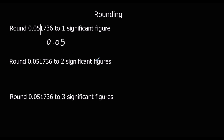Two significant figures: 0, 0, 1, 2. The next number is a 7, so that's 5 or above, so it is going to push it up. And it's going to be 0.052.